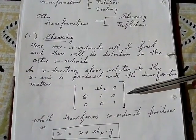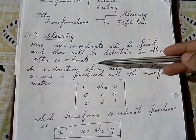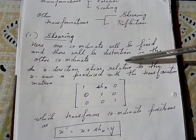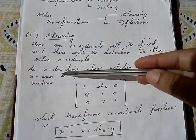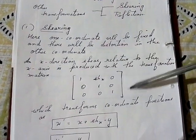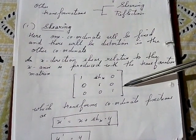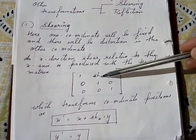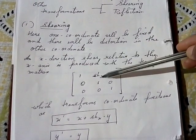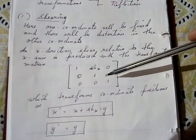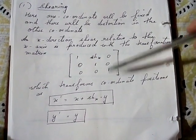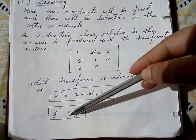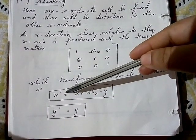If you are doing changes in the x coordinate, that is known as x-direction shear, or simply x-shear. When performing changes related to the x axis, the homogeneous matrix uses one parameter — shx — which is applied to the x coordinate, while the y value remains the same.